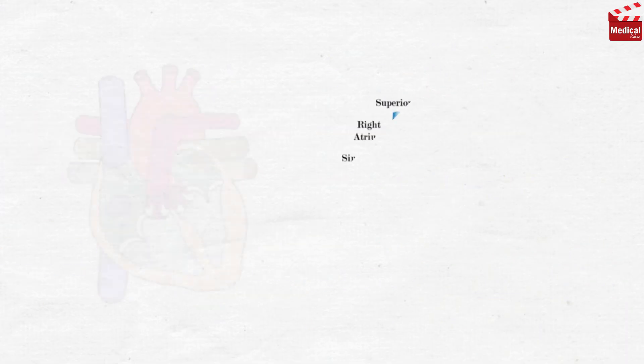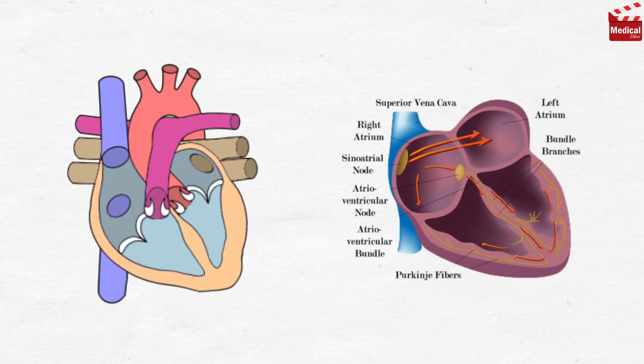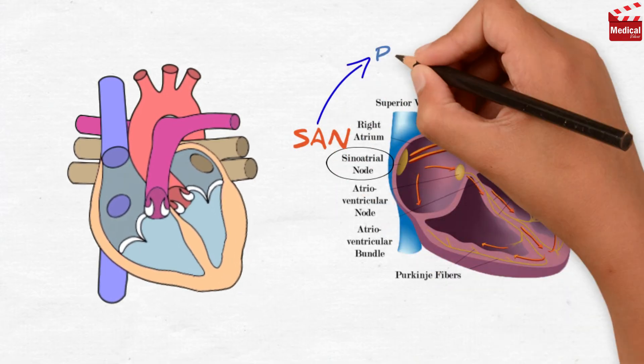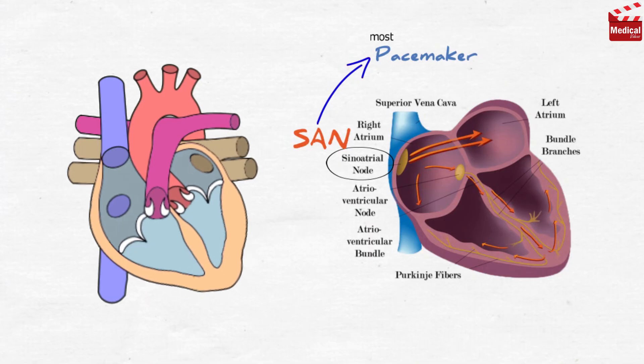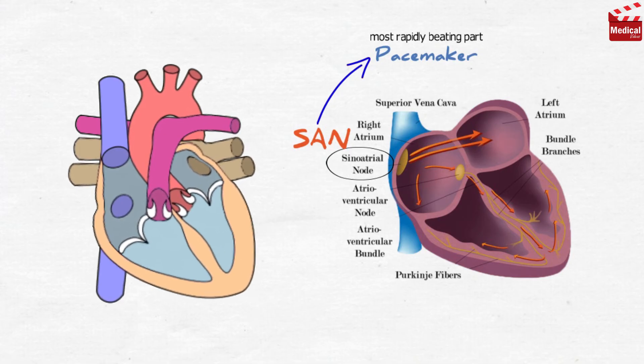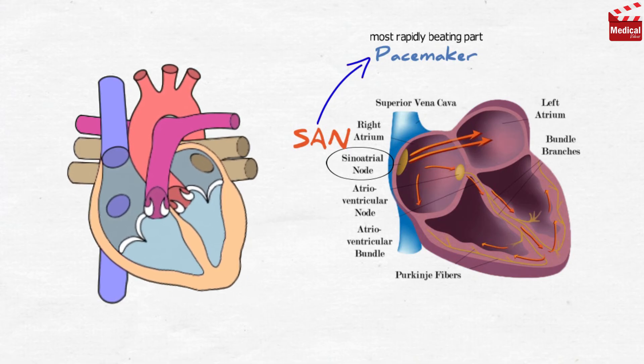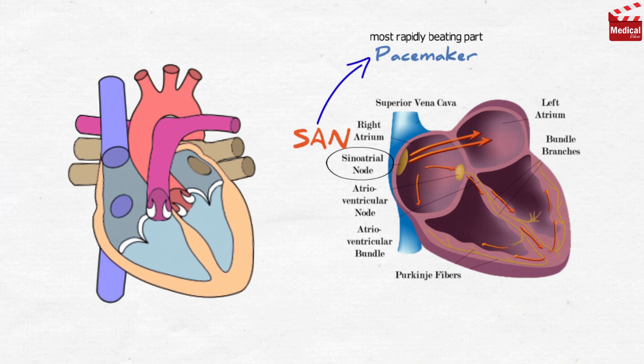So let's talk about the conducting system of the heart. The heart beats rhythmically, and this rhythm depends mostly on sinoatrial node, or known as SAN. SAN is called the pacemaker of the heart, as it is the most rapidly beating part of the heart. So, SAN controls the heart rhythm and initiates the contraction of the heart. In general, the part discharging at the highest rate is the pacemaker of the heart.